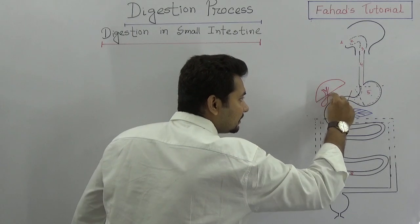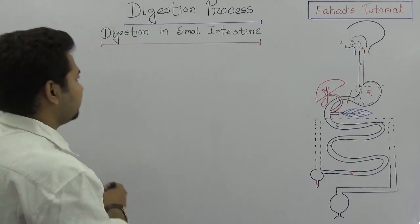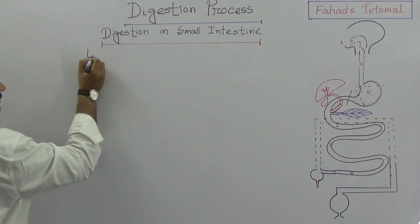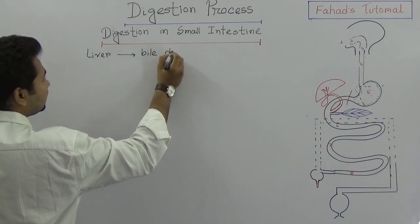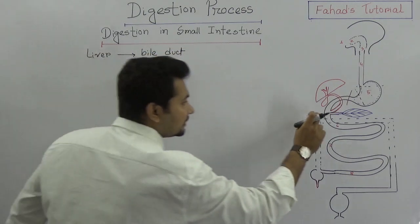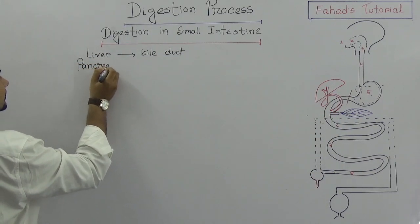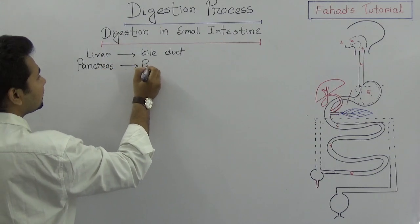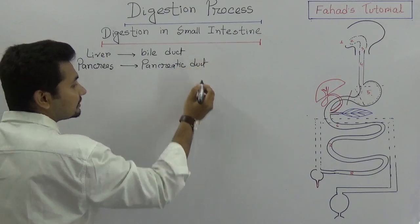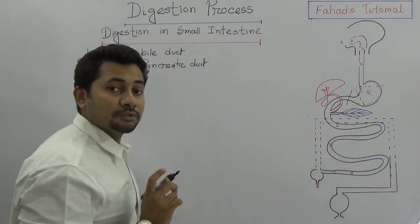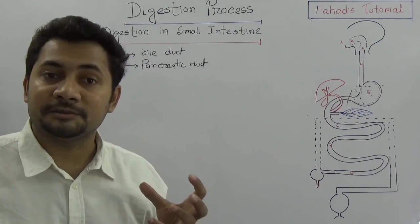In the duodenum, two ducts have entered: from the liver, a bile duct has opened in the duodenum, and also from the pancreas, the pancreatic duct has opened in the duodenum.